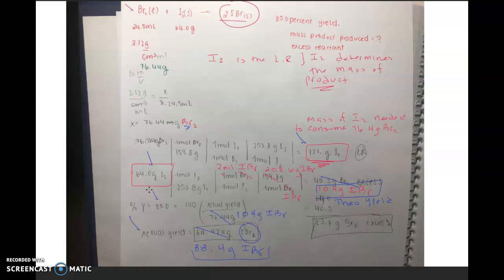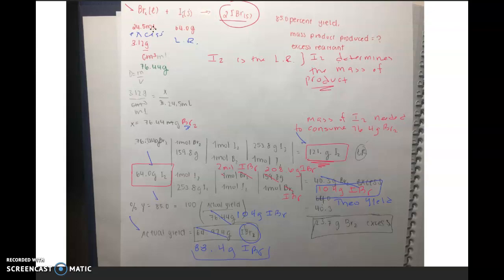The next thing to figure out is, well, we know that iodine is the limiting reactant. Therefore, bromine must be the excess reactant — there's some of that left over. The question is how much of the excess reactant is left over, and that's the next calculation.